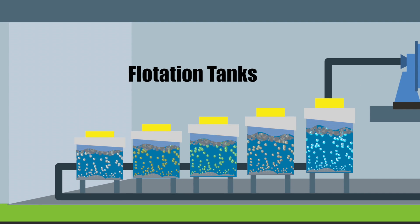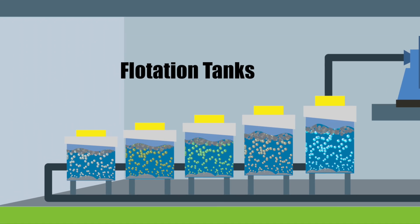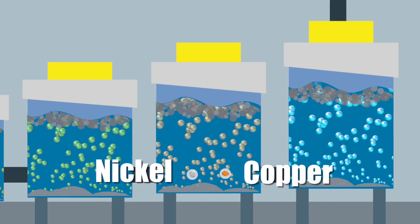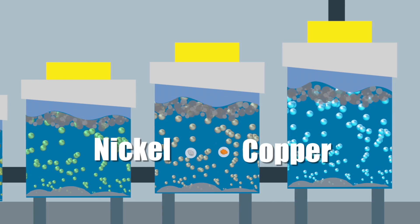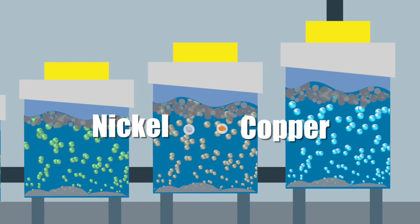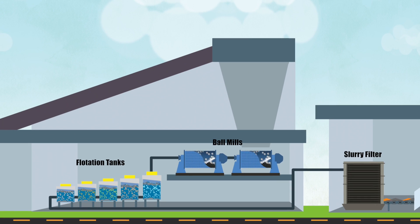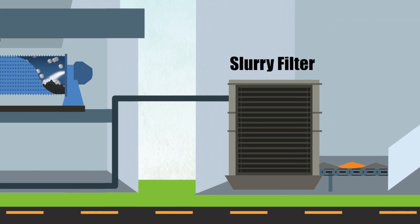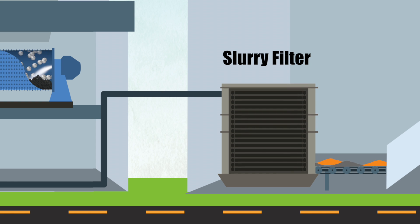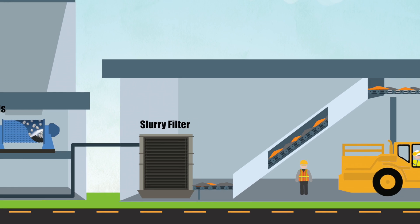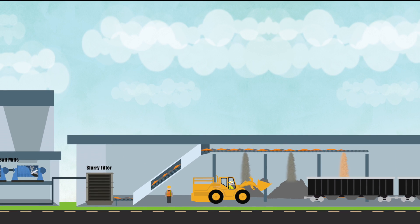Next, we use several stages of flotation, where we use finely tuned chemistry to separate the nickel and copper from all of the rest of the material. The secret ingredient? Air bubbles. After floating the nickel and copper through a series of flotation cells, we thicken the slurry and filter out most of the water. Finally, we have nickel and copper concentrates. All of this because of a needle in a haystack.